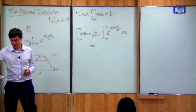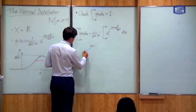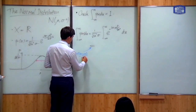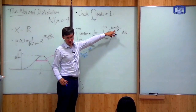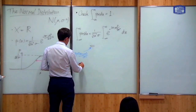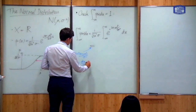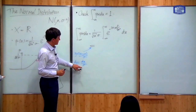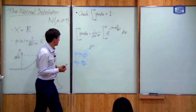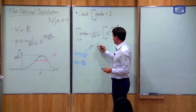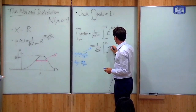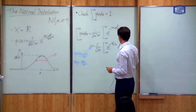We can simplify this a great deal by defining a new variable: let y = (x − μ) / σ. Then the exponent becomes nicely just y² over 2. Also, dy = dx / σ, and dx over σ is exactly what we have, so that also goes away. When we make the substitution, this becomes 1 over √(2π) times the integral from minus infinity to infinity of e to the minus y² over 2 dy.